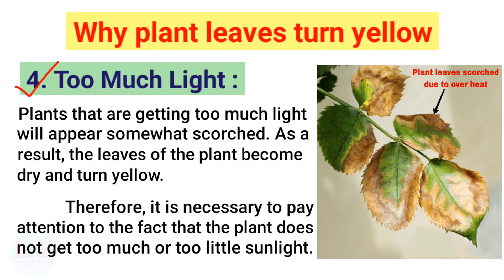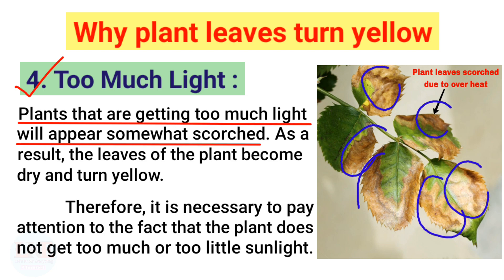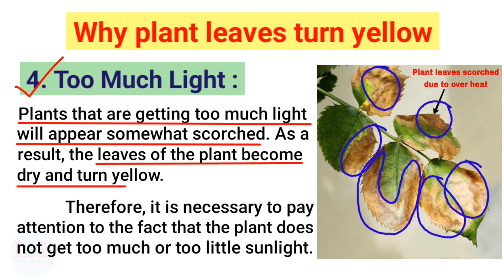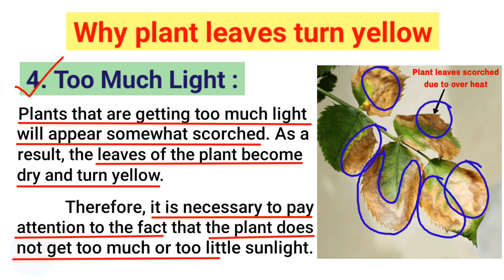Too much light — plants that are getting too much light will appear somewhat scorched. As a result, the leaves of the plant become dry and turn yellow. Therefore, it is necessary to ensure that the plant does not get too much or too little sunlight.